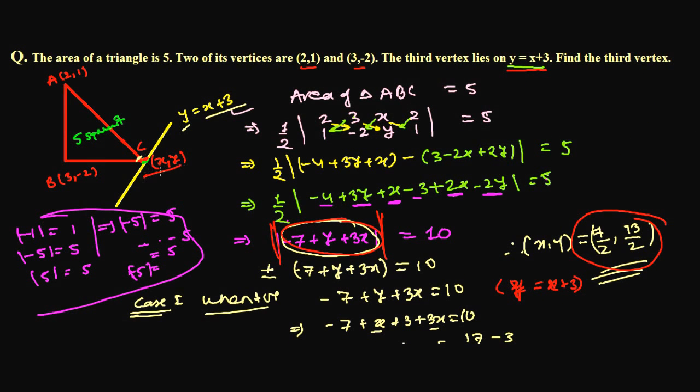So the two possible third vertices are (7/2, 13/2) and (-3/2, 3/2). These are the two possible points for this vertex. Try similar questions from your textbook or exercise book. If you have any questions or conceptual doubts, feel free to message me. Catch you in the next video — goodbye, and don't forget to subscribe to the channel!